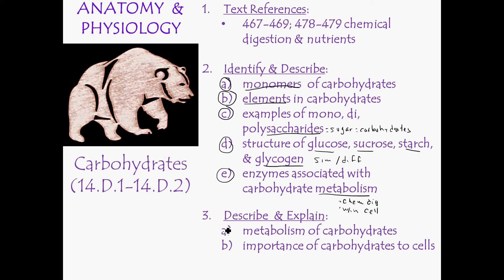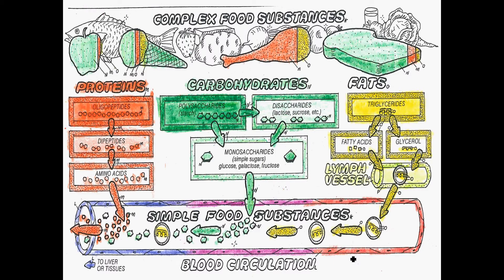Understanding why carbohydrates are important to cells and how they're going to be used is the key takeaway. Looking at this coloring book page, we're focusing on the green part with carbohydrates. We ingest carbohydrates in lots of different forms — as polysaccharides, disaccharides, and monosaccharides. Importantly, only monosaccharides get absorbed into the bloodstream, so any polysaccharides or disaccharides must first be chemically broken down.